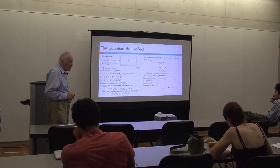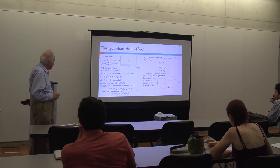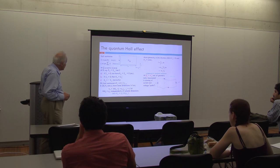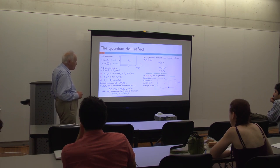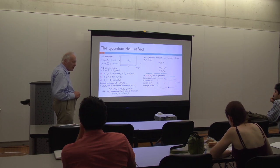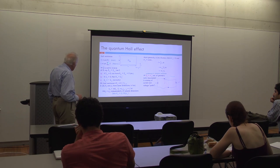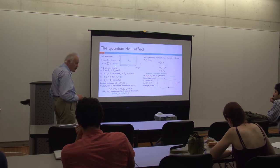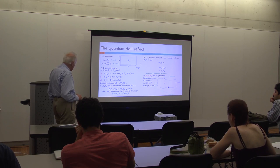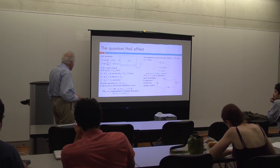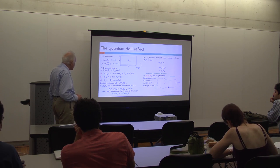Theorists, by and large, tend to do the opposite — they tend to imagine that you apply a given voltage and measure the current. You have to treat the conductance here as a tensor in general: the conductance tensor sigma.